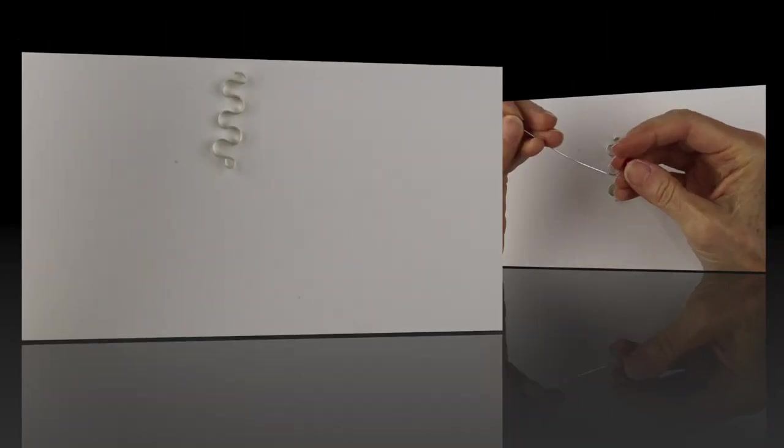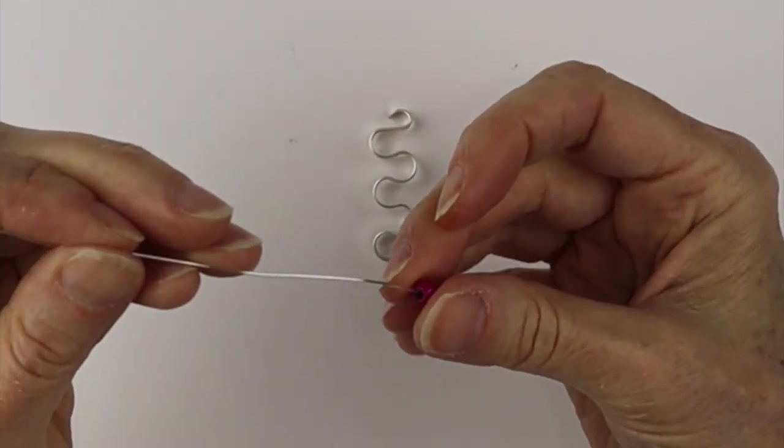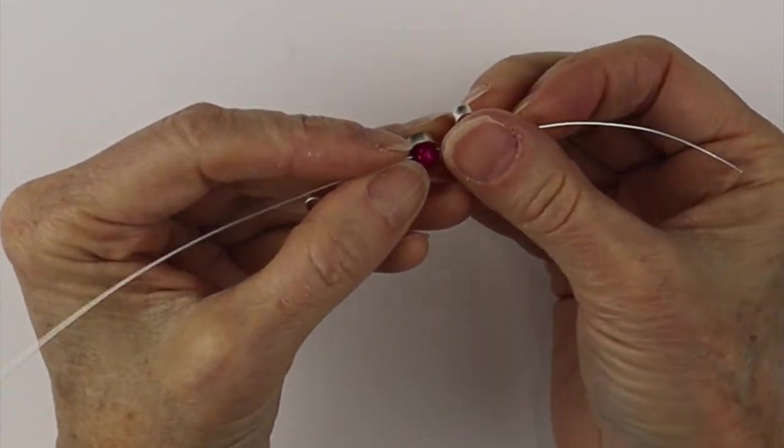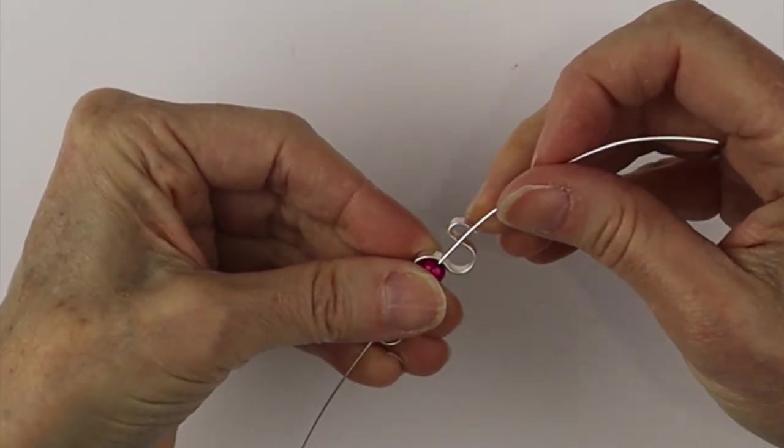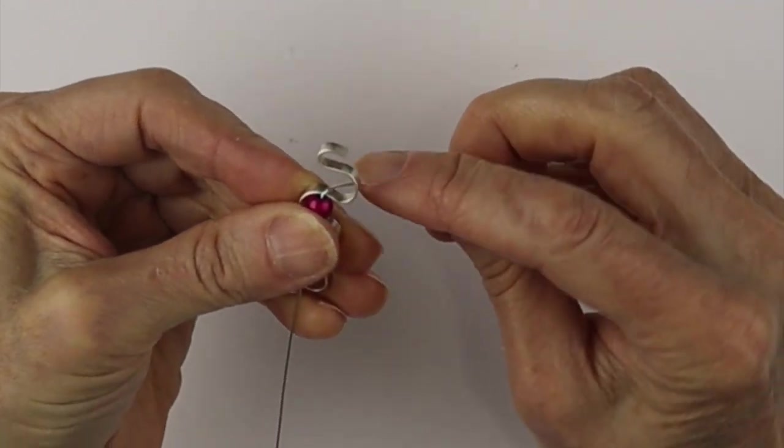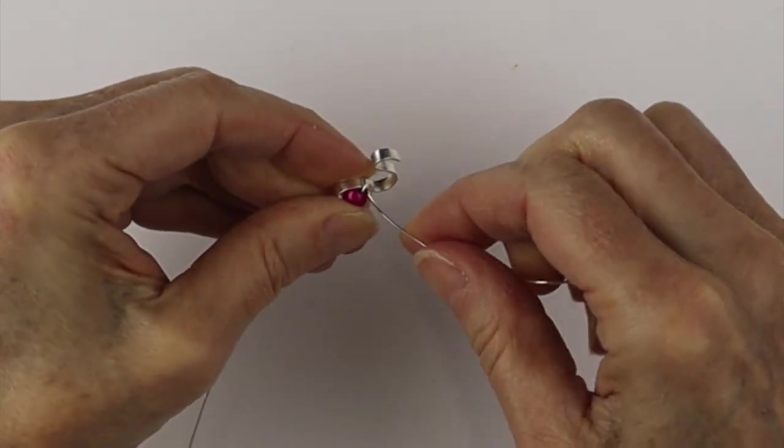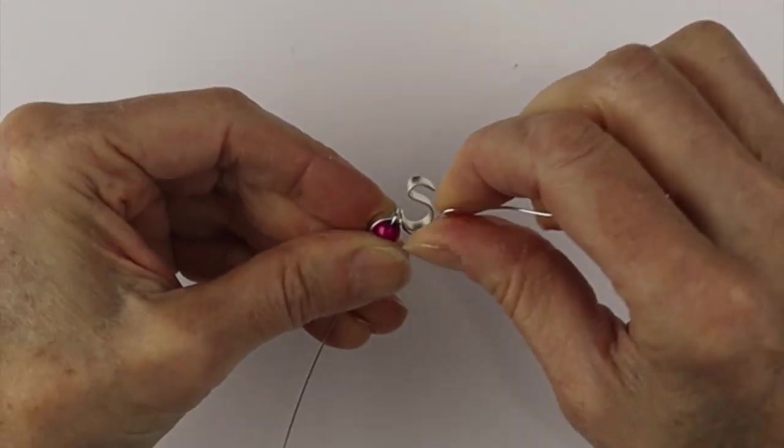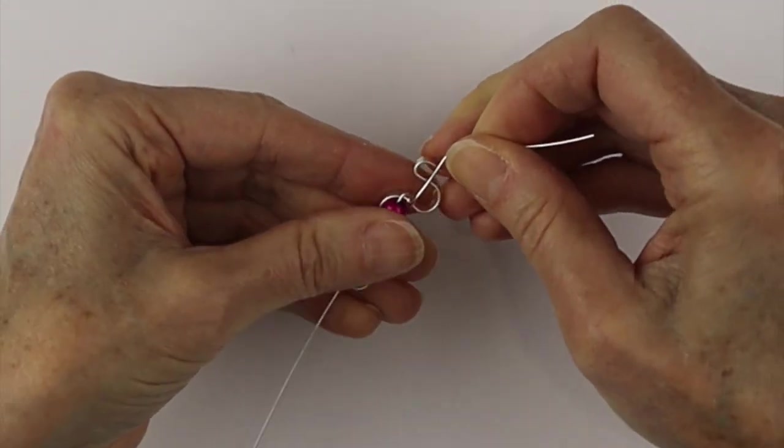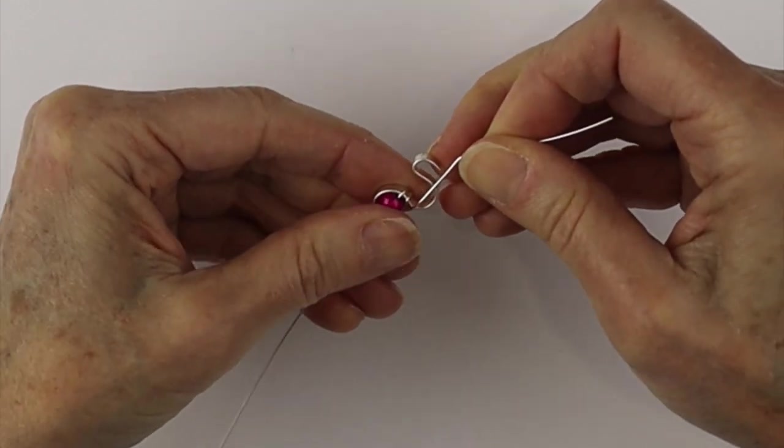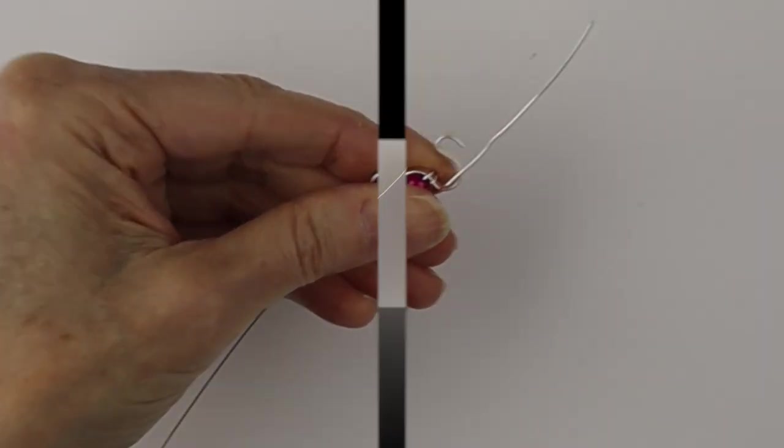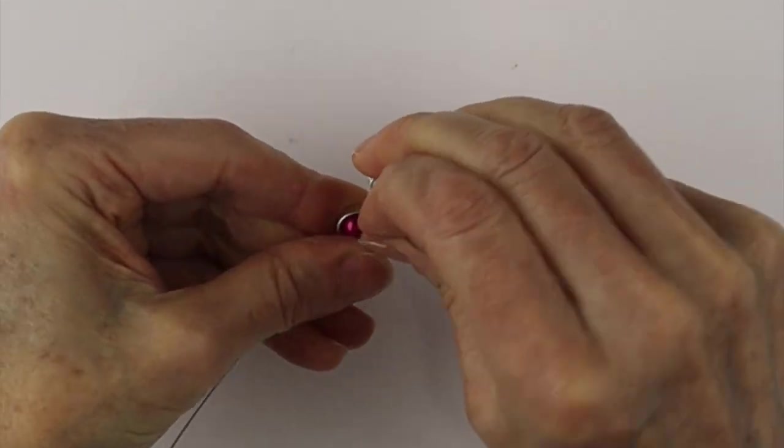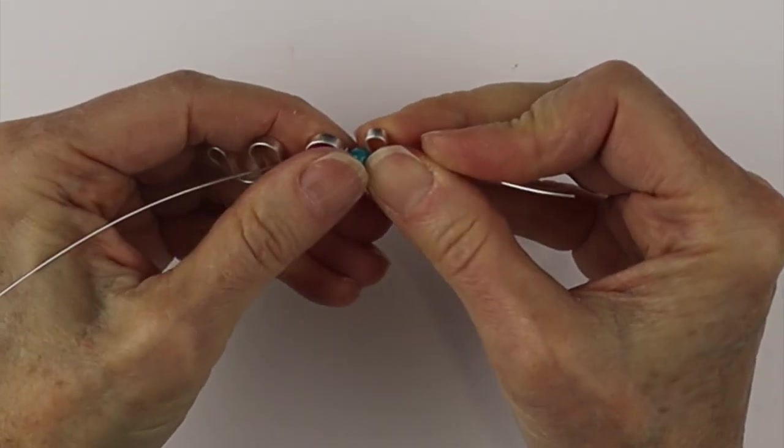From there I'm going to take some 22 gauge wire and stick on one of our miracle beads, the six millimeter miracle bead. Near the bottom we're just going to wind it around to hold one of the beads in place. You're better to start sort of in the middle of the piece because if you try to start at one end it's really hard to wind it so it's secure.